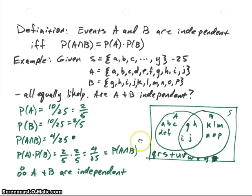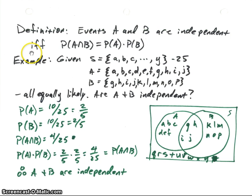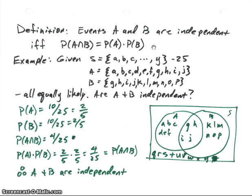On the next page, I write at the top the definition of independent events: events A and B are independent if and only if the probability of A intersect B is equal to the probability of A times the probability of B. Remember, this is not always true — it's only going to be true for independent events.